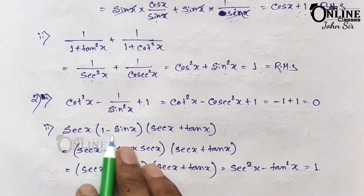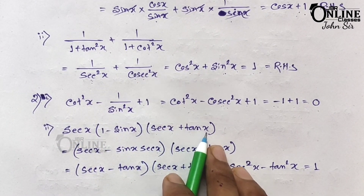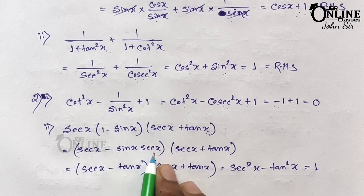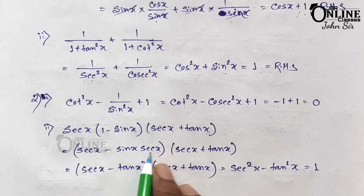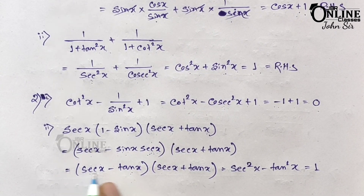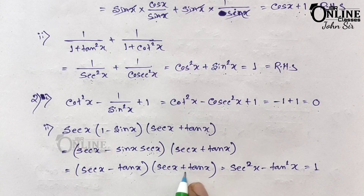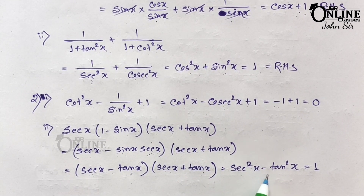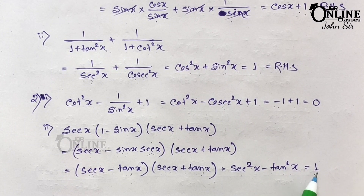Number 2: sec x into (1 − sin x) into (sec x + tan x). First multiply sec x with 1 to get sec x, and sec x into sin x gives sin x·sec x. Now sin x/cos x equals tan x, so we have (sec x − tan x)(sec x + tan x), which is the formula a² − b². So sec²x − tan²x = 1, proved.